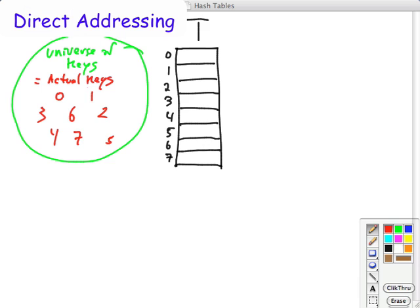Hash tables are a generalization of arrays. Arrays can be seen as a simple version of a hash table using what is called direct addressing. In this approach you allocate a table big enough to have a slot for every possible key in your universe of keys, and then store stuff under those keys in the table through direct addressing.